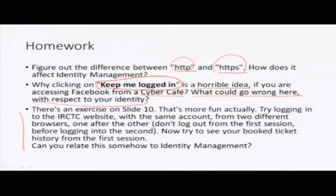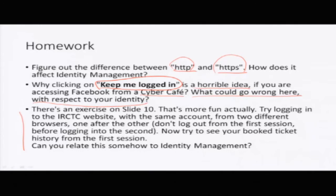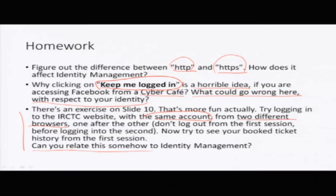The last exercise is about the IRCTC website, which uses your username and password as your identity. Go to the IRCTC website and try to log in from the same account but with two different browsers — say Firefox and Chrome. Log into Firefox first, then open Chrome and log in with the same username and password. Then from the Firefox session try to access some information like your booking history or cancellation history, and see what happens. Think about how you can relate what you observe to identity management.